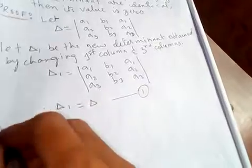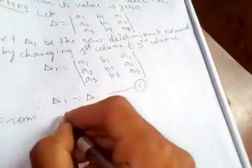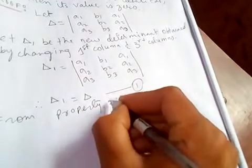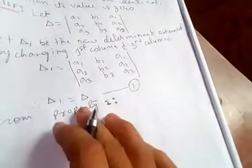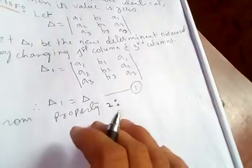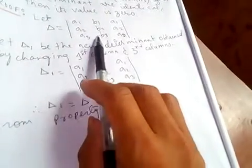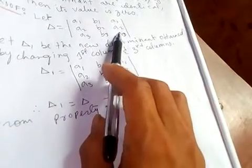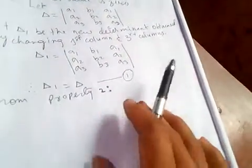From property two that I have proved previously, property two says that if two columns or two rows of a determinant are changed, then the sign should be changed.